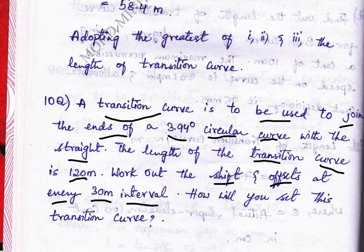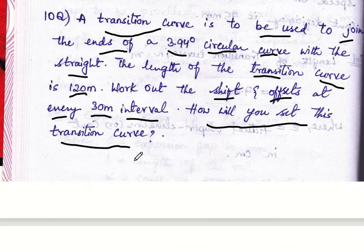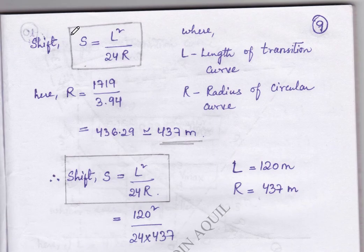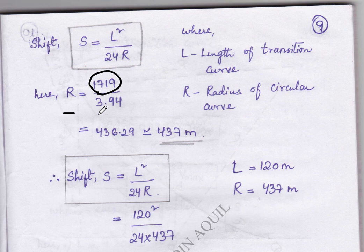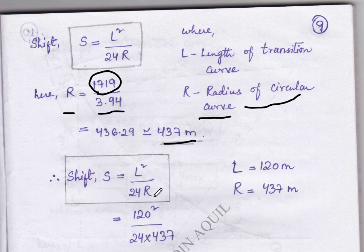In 120 meters there are four intervals at 30, 60, 90, and 120 meters. Moving towards the solution, the shift can be calculated by the formula S equal to L squared by 24R, where L is the length of transition curve and R is the radius of the circular curve. R can be calculated by the formula 1719 divided by the degree of curvature, which is 3.94, giving R equal to 437 meters.